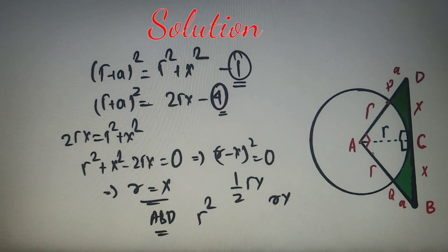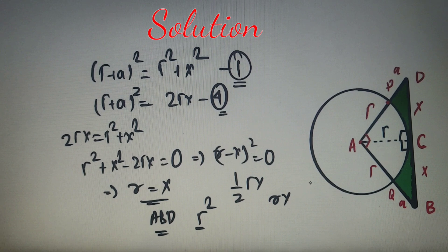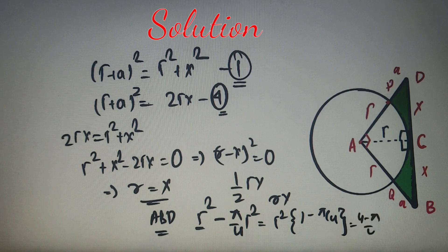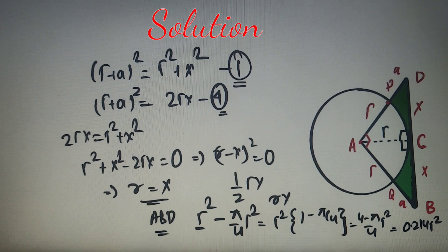We need the answer in terms of R squared. The area of the triangle is R². The area of the quadrant is (π/4)R². So the shaded region equals R² − (π/4)R² = R²(1 − π/4) = (4 − π)/4 · R². Calculating this gives a final answer of 0.214 R², which is option B.